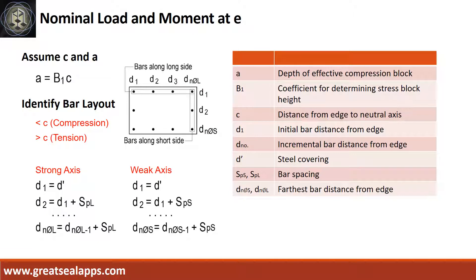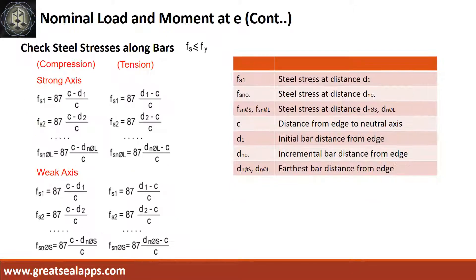Assume a value of neutral axis C that will correspond to the given eccentricity, then identify the force type of each bar arrangement in relation to the neutral axis. Solve the steel stresses in each bar set with corresponding force type, which should not exceed Fy.